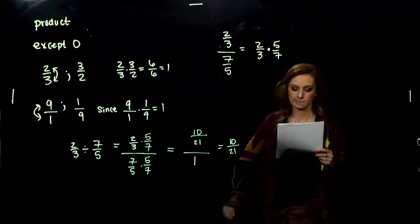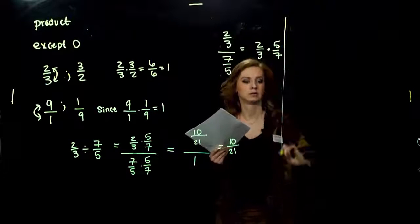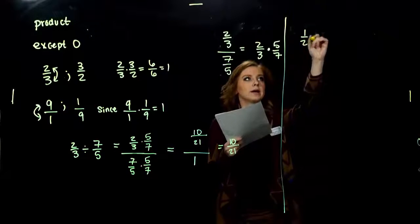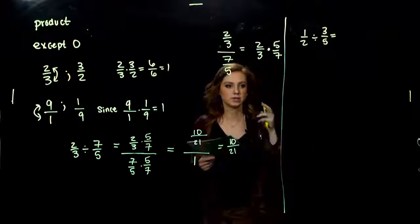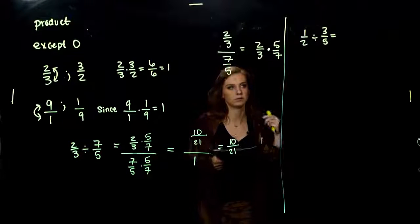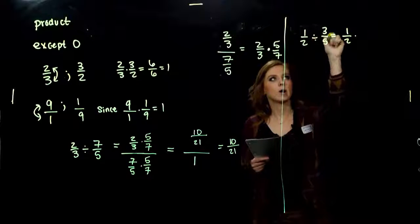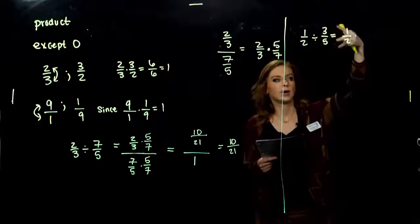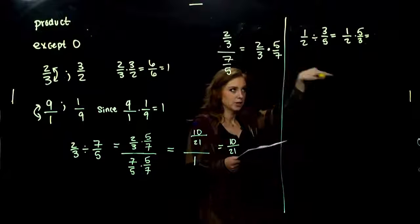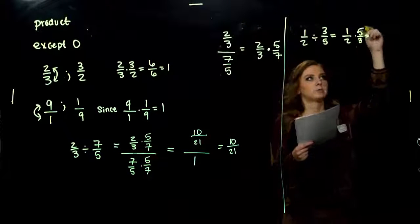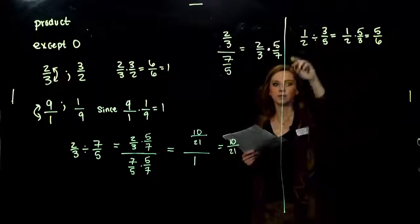We always keep the first fraction exactly as it is and multiply by the reciprocal of the second. First example: 1 half divided by 3 fifths. Division is really multiplying by the reciprocal. Keep the first one as is and multiply by the reciprocal of 3 fifths, which is 5 thirds. Multiplying straight across the top and bottom gives 5 over 6.